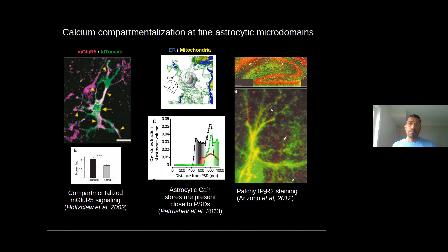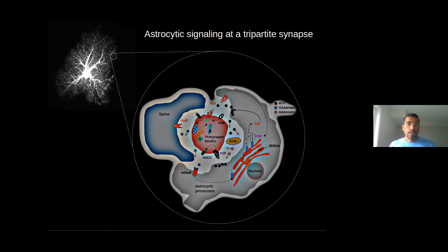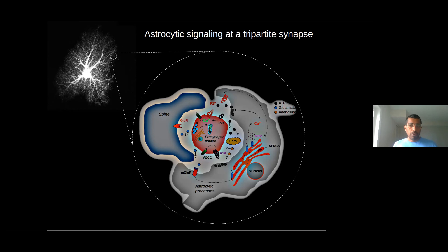There is a very punctate staining of IP3 receptors from experimental studies, suggesting that signaling in astrocytic processes can be very stochastic because it is mediated by a small cluster of IP3 receptors. There is a clear need to look at a single compartment right at the spine or synapse and understand how signaling evolves at this tight cellular space — a computational model would be greatly advantageous.